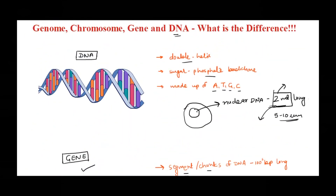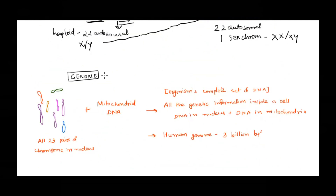So now we are done with DNA, gene, and chromosome. What is this genome then? A genome is nothing but an organism's complete set of DNA. For humans, that means all the chromosomes present — all the DNA that is present in the nucleus. Other than that, we also have DNA present in mitochondria. For plants, we would also take chloroplast into consideration. So for humans, the complete set of DNA means all the DNA present in the nucleus, and that together makes up the genome of an organism.